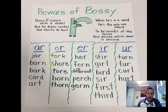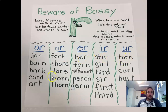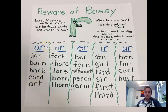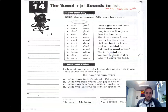All those words have different vowel sounds: fork is OR, her is ER, stir is IR, turn is UR. Now AR is also in there, but that's what we did last week. I meant OR, ER, IR, and UR — those are the bossy R sounds we're focusing on today.